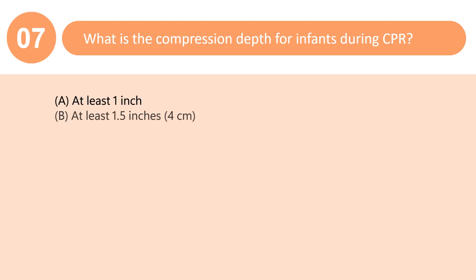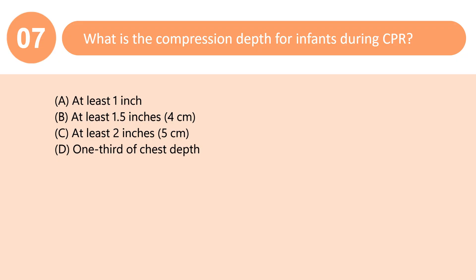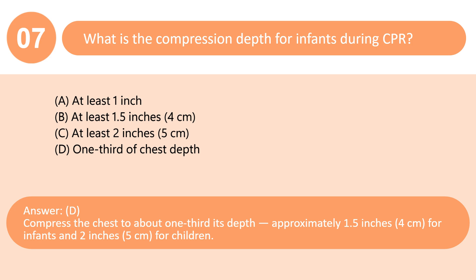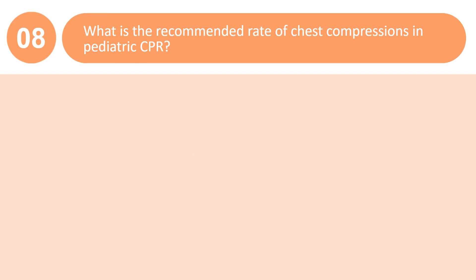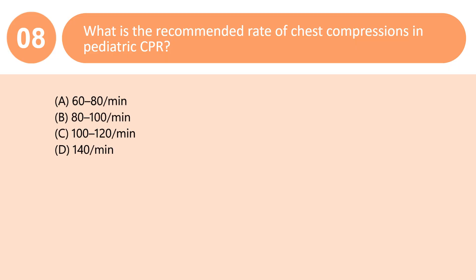What is the compression depth for infants during CPR? A. At least 1 inch. B. At least 1.5 inches (4 cm). C. At least 2 inches (5 cm). D. One-third of chest depth. Answer: D. Compress the chest to about one-third its depth — approximately 1.5 inches (4 cm) for infants and 2 inches (5 cm) for children.